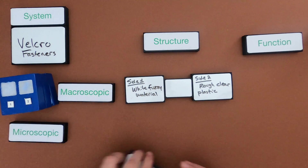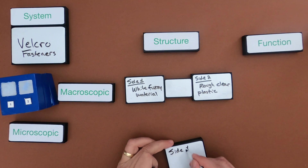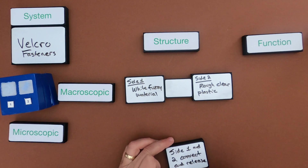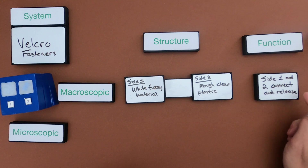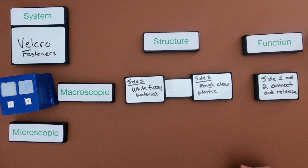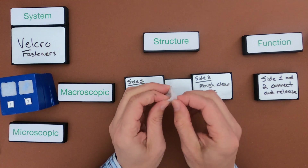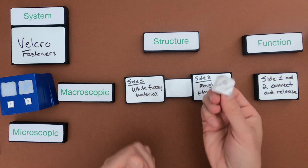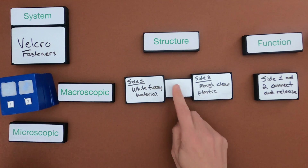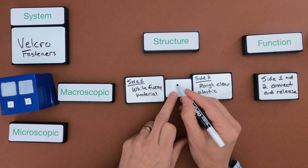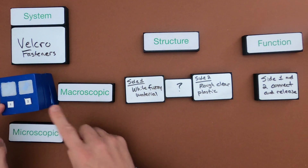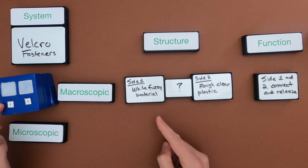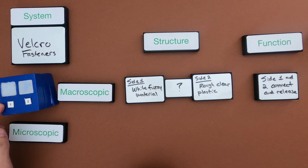Looking at the function: side one and side two connect and they release. The two sides come together and then release when pulled apart. But what's going on with the interaction between side one and side two — I don't really know. At this scale, I don't get enough information on the structures to make sense of this interaction. So I need to go to the microscopic level.